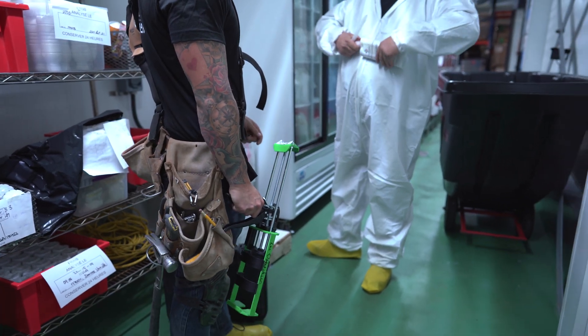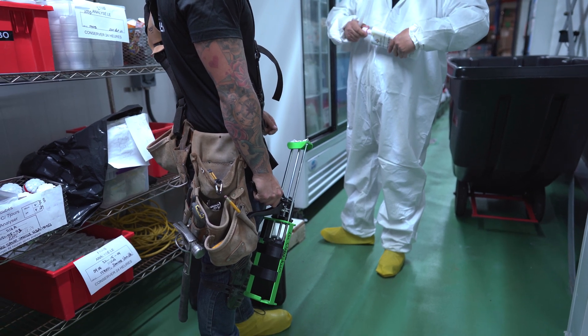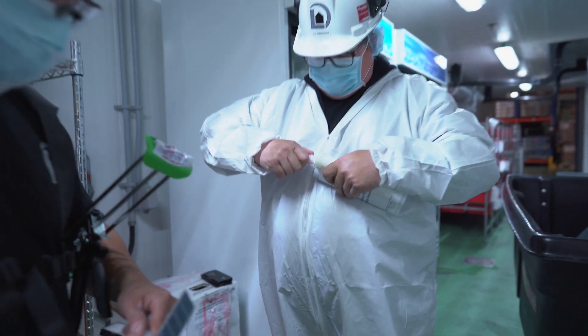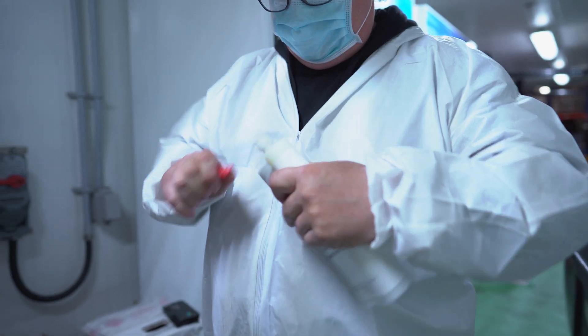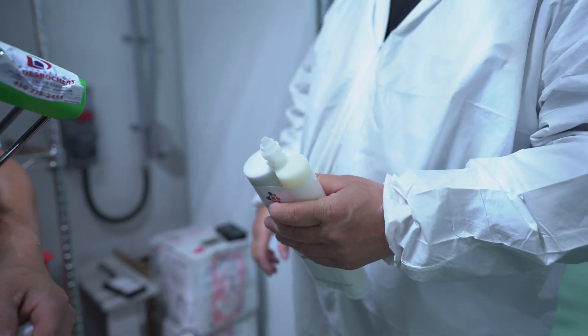Insert the glue cartridge into the applicator gun. Install the static mixer on the cartridge, making sure the nut is well tightened.